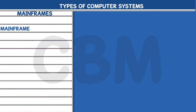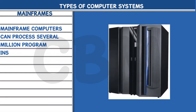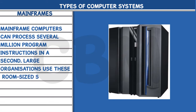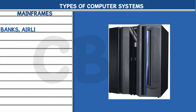Mainframes: Mainframe computers can process several million program instructions in a second. Large organizations use these room-sized systems as they can handle a lot of data. They are mainly used by insurance companies, banks, airlines, and railway reservation systems.